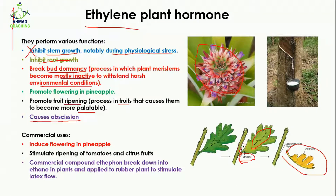There are many commercial applications of ethylene. For example, it is used to induce flowering in pineapple plants and to stimulate the ripening of tomatoes and citrus fruits — citrus fruits include lemon, tangerines, and oranges — making them sweet and soft.